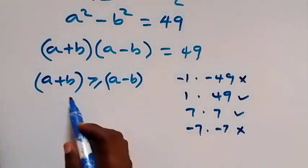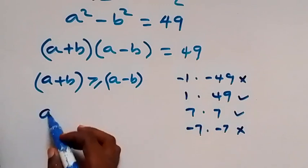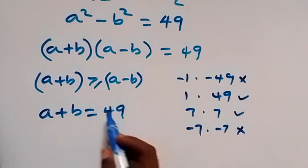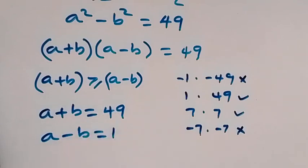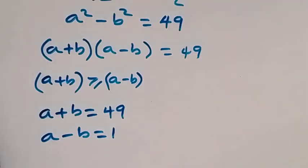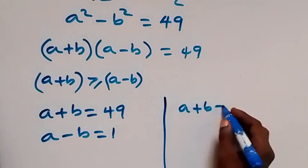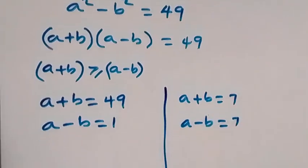We can equate: for the first case (1 and 49), since a + b ≥ a - b, we set a + b = 49 and a - b = 1. For the other case (7 and 7), we set a + b = 7 and a - b = 7 as well.